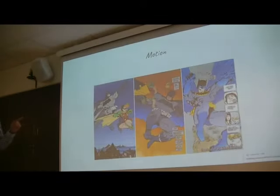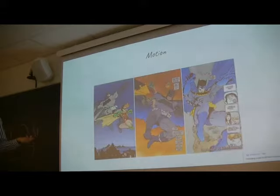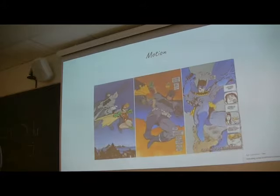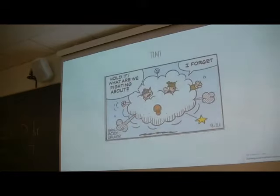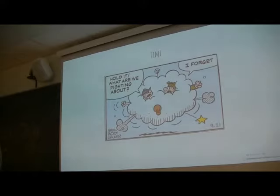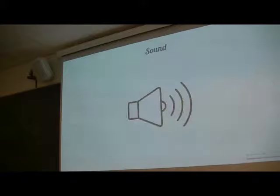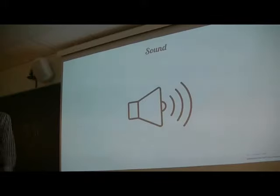In the section called motion, I describe how images trick visual perception — like the V5 area, the visual motion areas of the brain — and how we have mental representations of movement. In the section called time, I talk about how panel length can affect our temporal judgments of images inside comics, and how content affects this also. For sound, I talk about how we fill in and make more concrete the sound effects that comic artists illustrate.